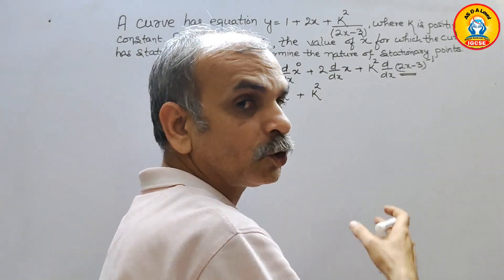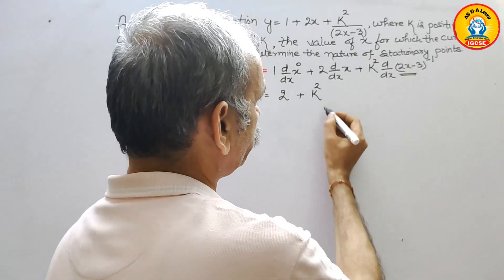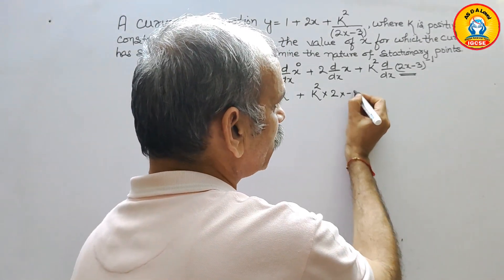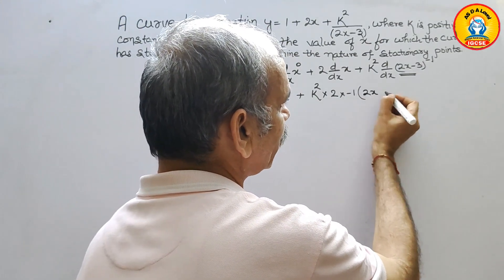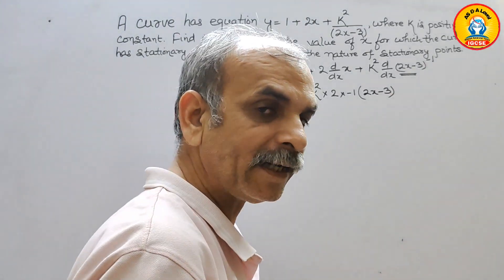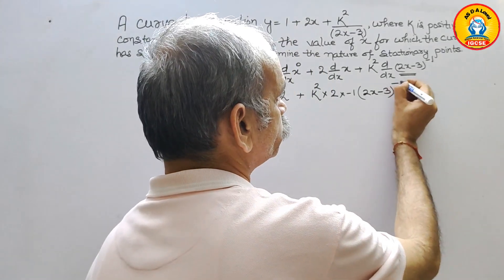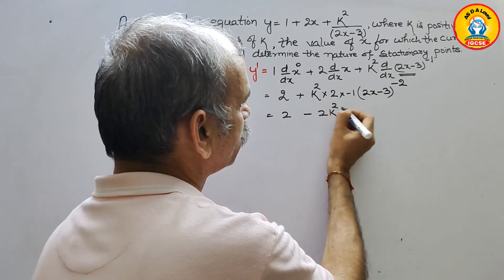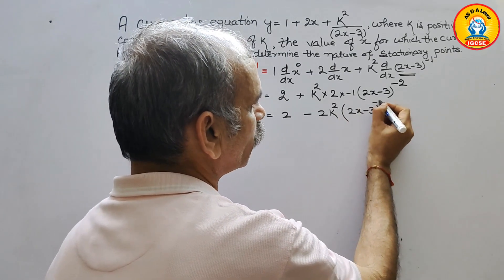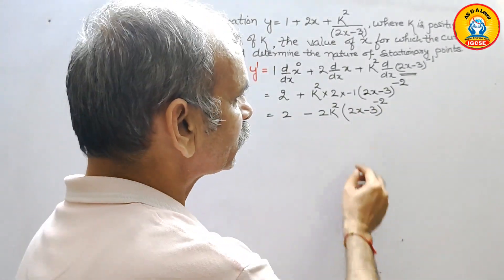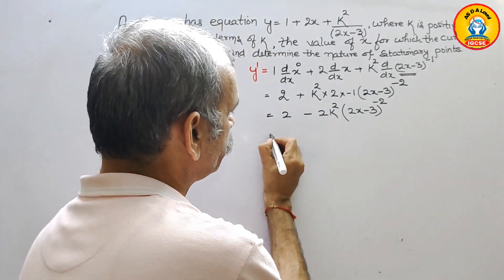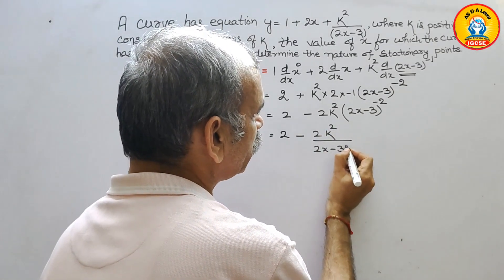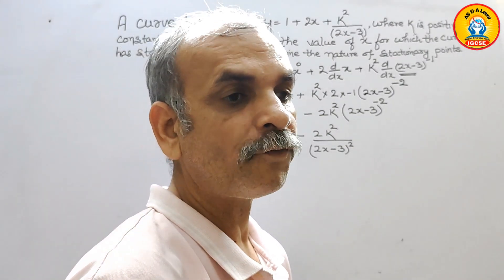Using the chain rule, we first differentiate (2x - 3), which gives 2. Then bring down the power: power is −1, so it becomes −1 times 2, and (2x - 3) raised to −1 − 1 = −2. Solving this gives y' = 2 − 2k²/(2x − 3)².